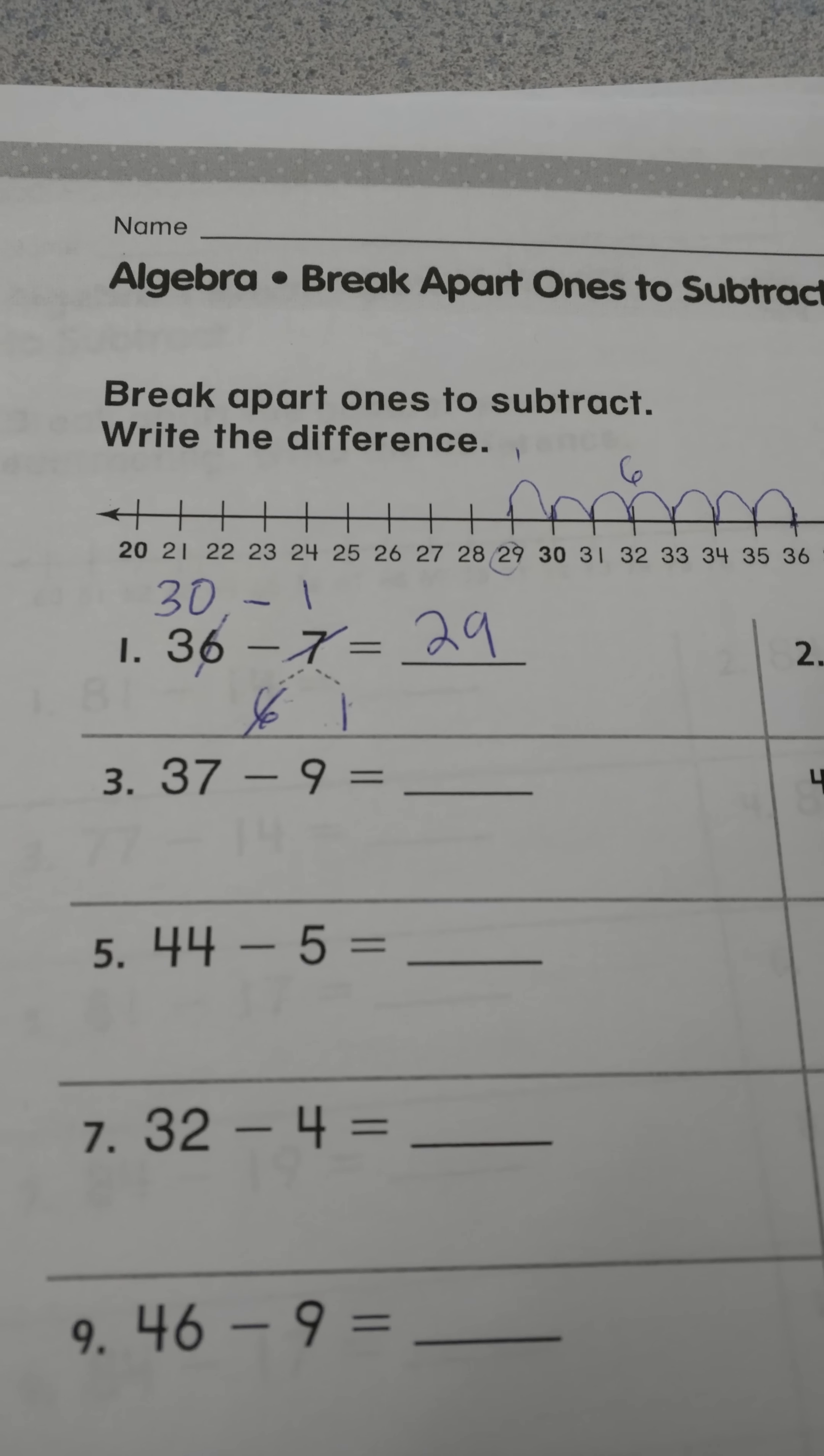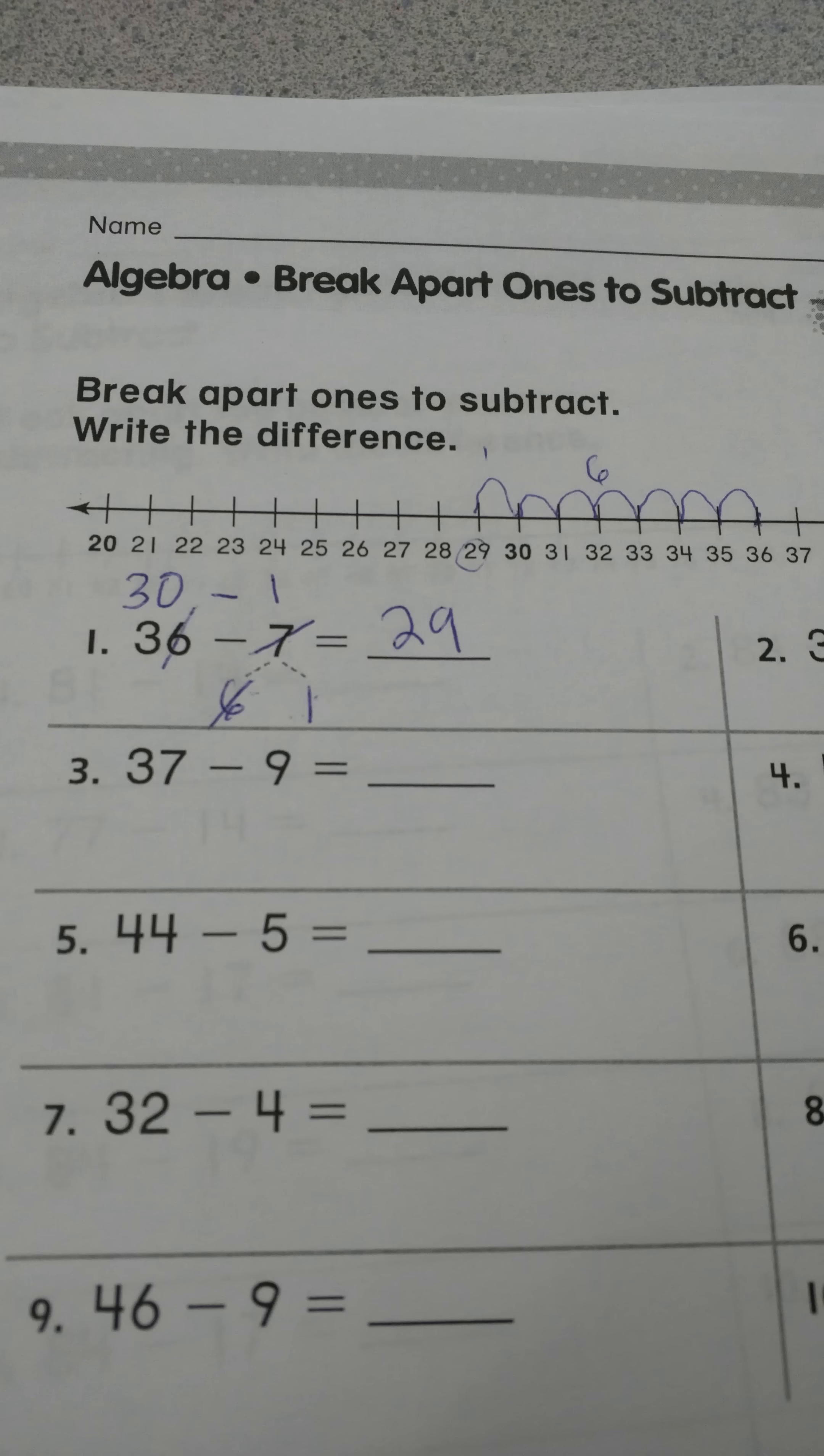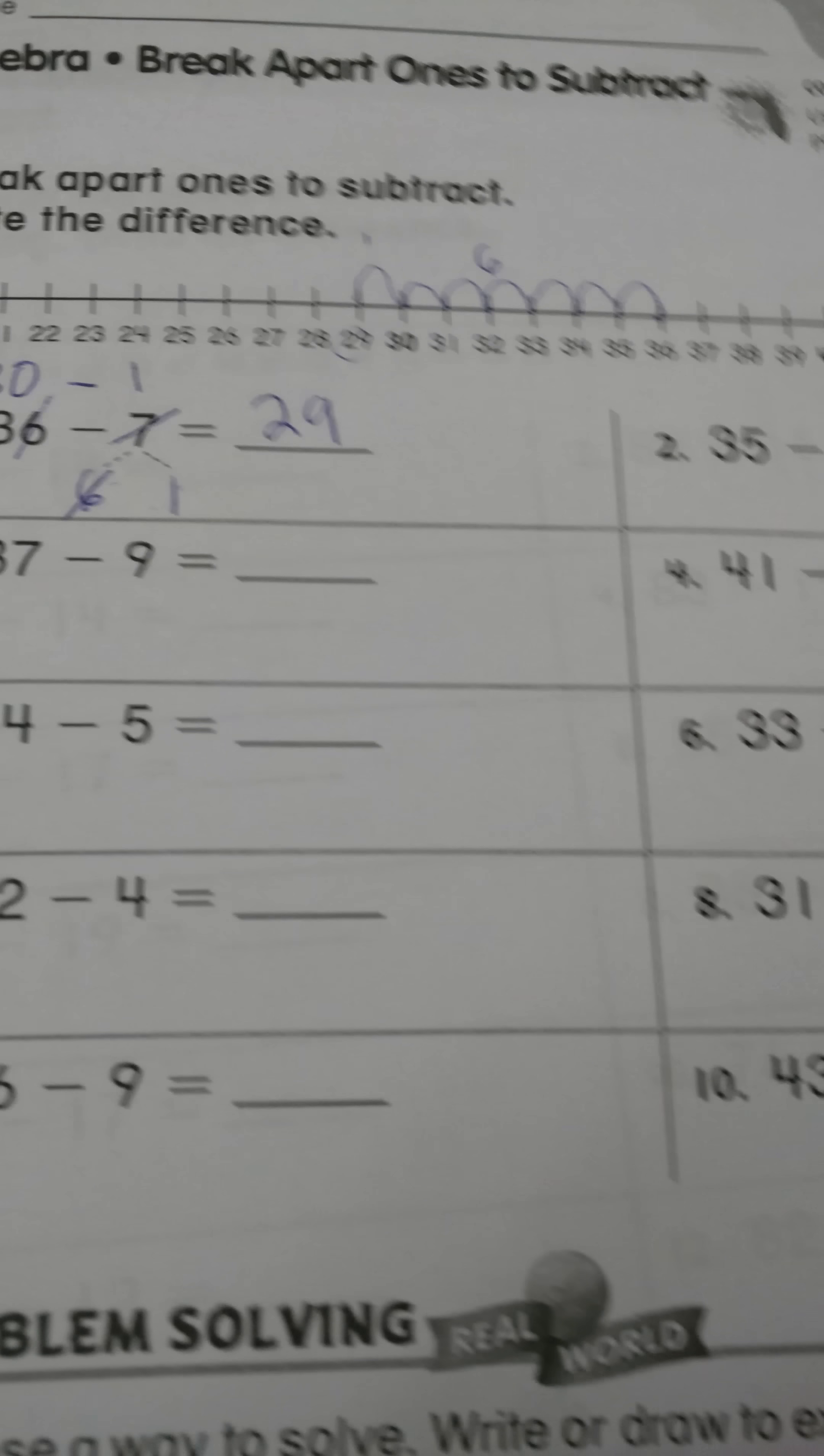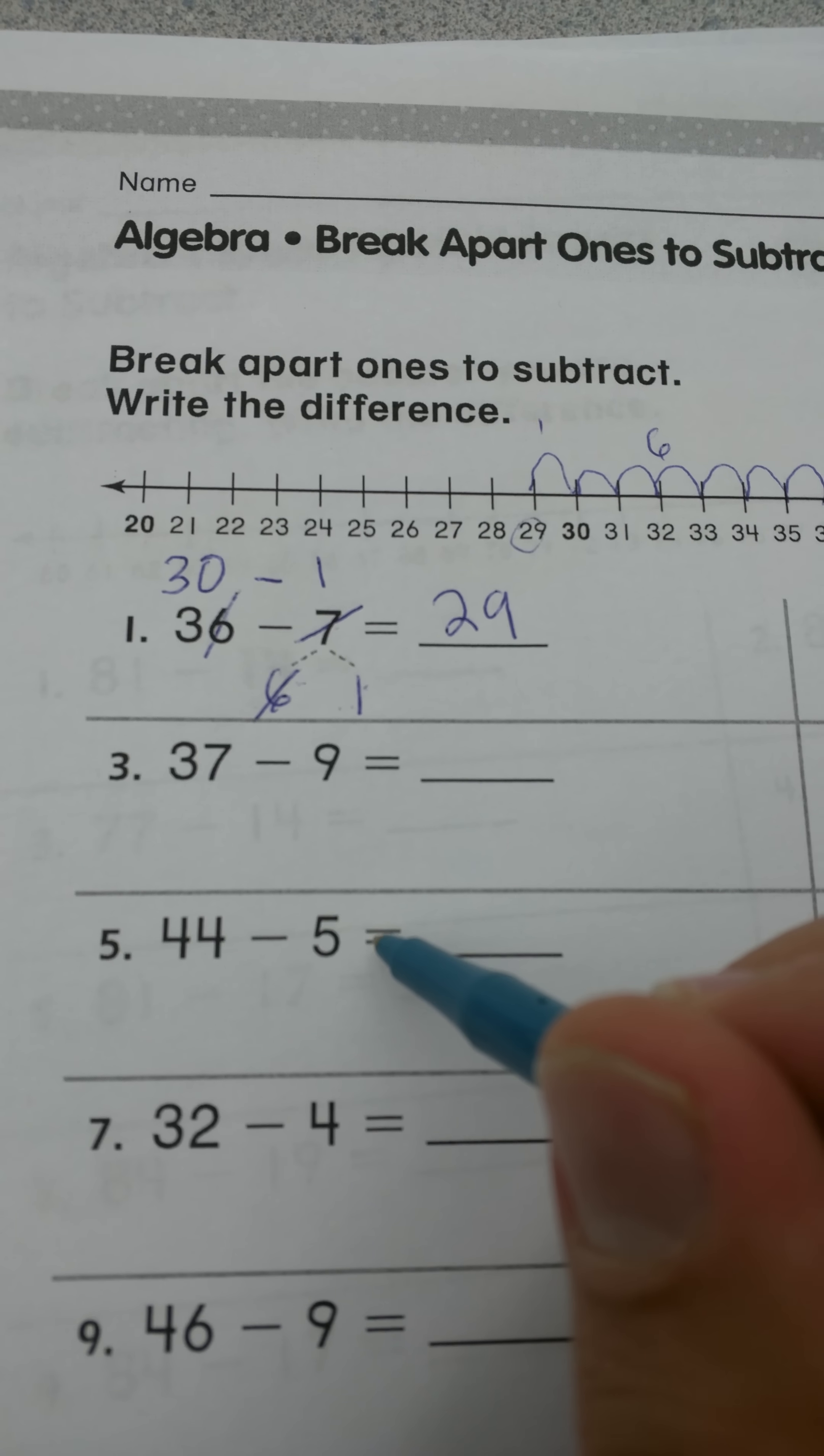I'll show you another one here where we have 37 minus nine. Actually you know, let's do a problem that's a little bit different looking. That's not in the 30s. I have a lot of 30s and 40s here. Huh, interesting. So anyways, let's try this one. Number five, 44 minus five.